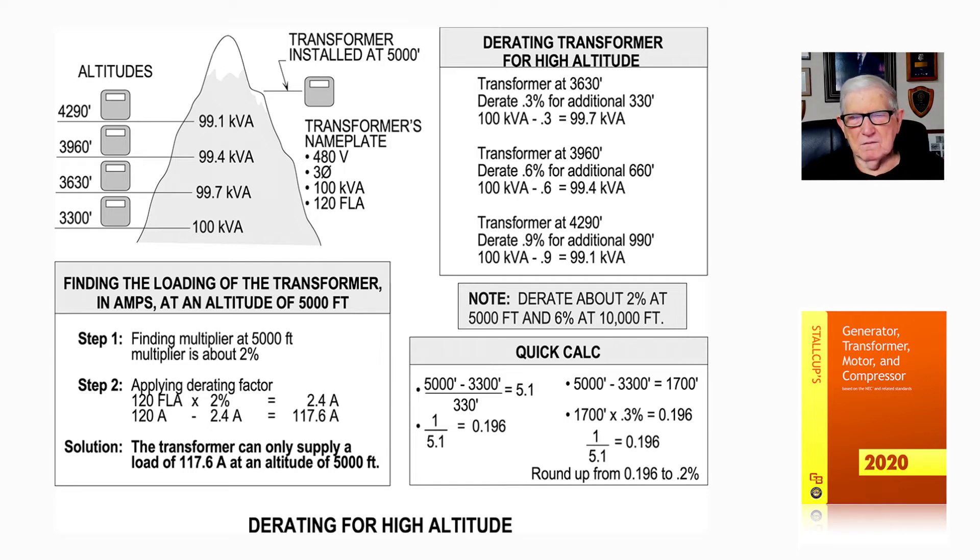Now for the quick calculation to see how this is derived: 5,000 feet minus 3,300 feet divided by 330 feet gives you 5.1. The reciprocal of that number, 1 divided by 5.1, is 0.196. Now 5,000 feet minus 3,300 feet is 1,700 feet. 1,700 feet times 3% equals 0.196. Since you know it's 1.96, naturally you'd round it up to 2%.